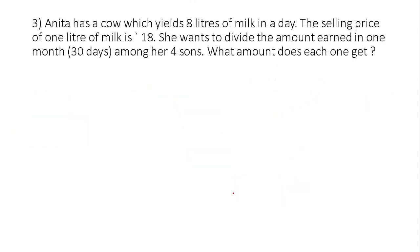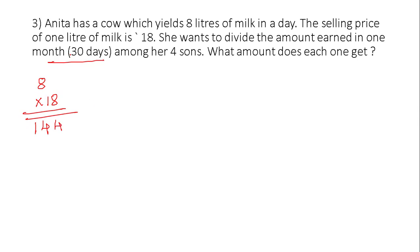Third one: Anita has a cow which yields 88 liters of milk in a day. The selling price of 1 liter of milk is 18 rupees. She wants to divide the amount earned in 1 month, that means 30 days, among her four sons. What amount does each one get? 1 liter is 18 rupees, so 8 liters gives 144 rupees — earnings in a day.